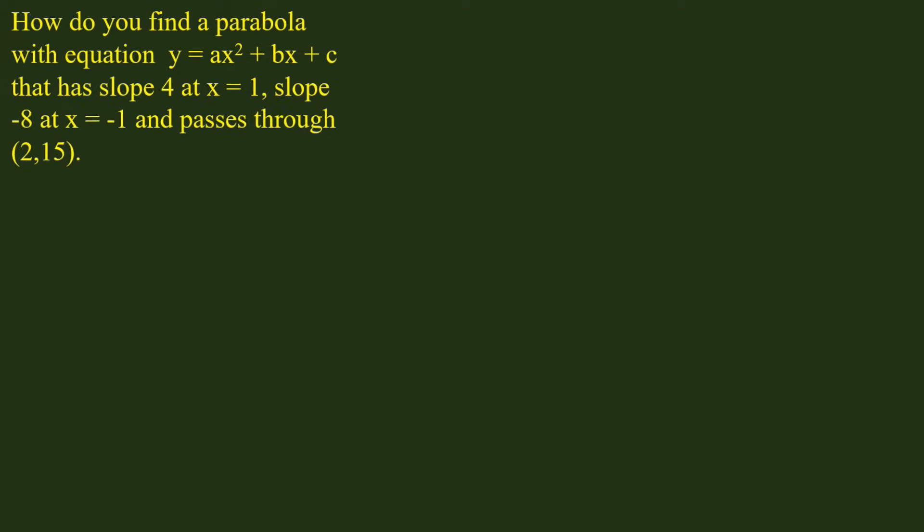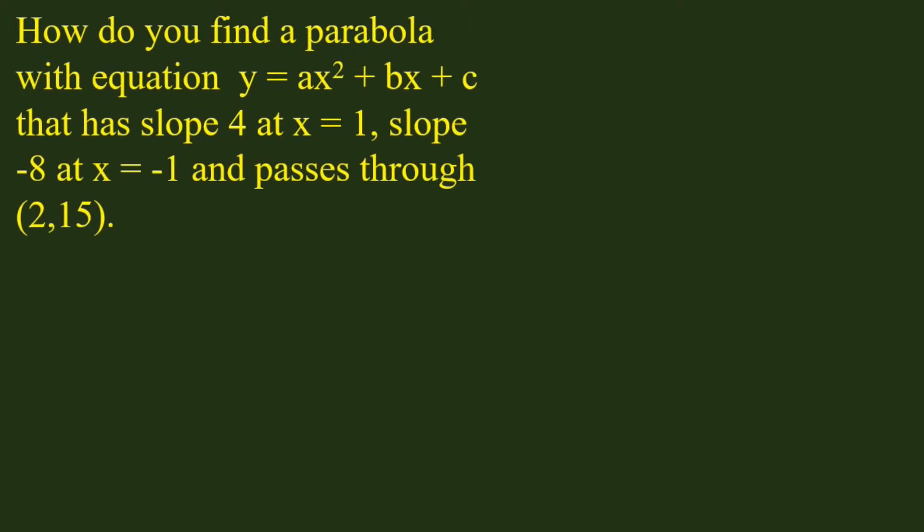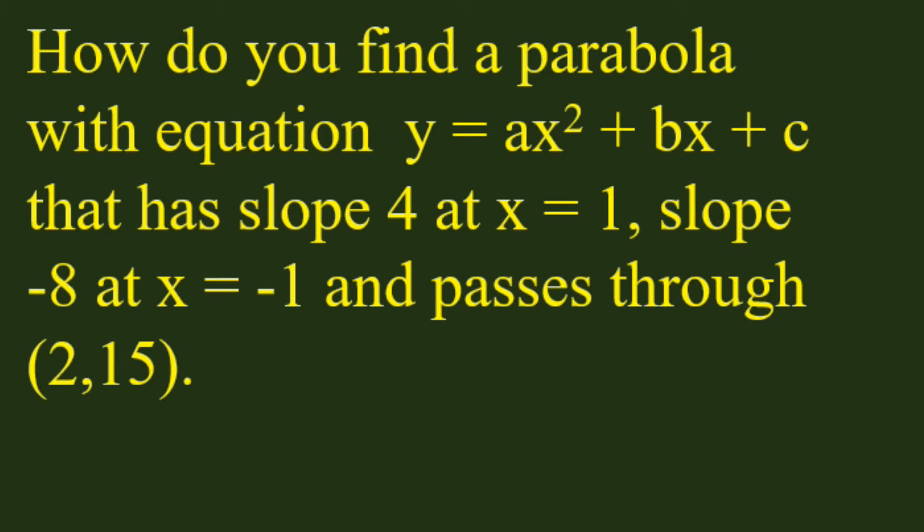How do you find a parabola with equation y = ax² + bx + c that has slope 4 at x = 1,